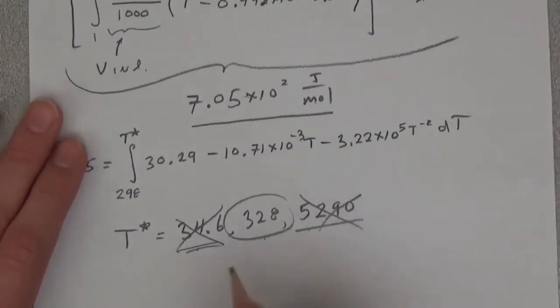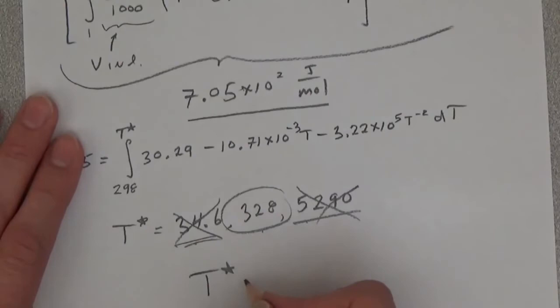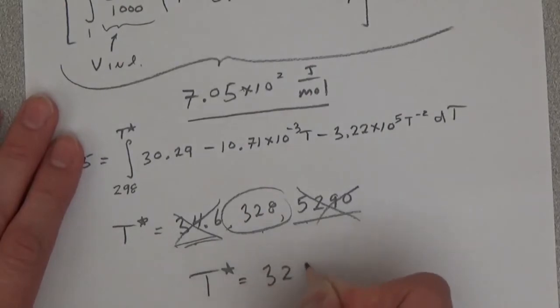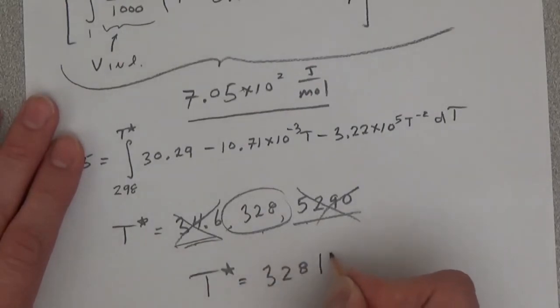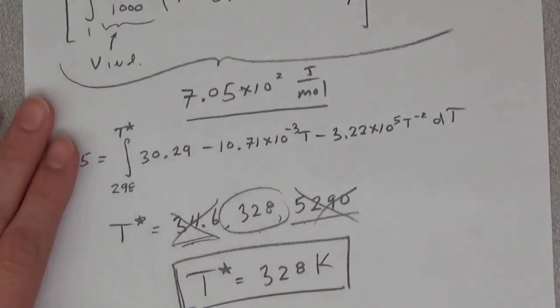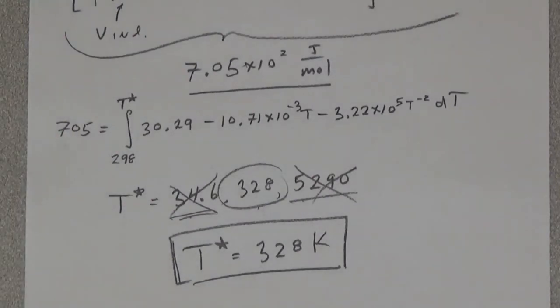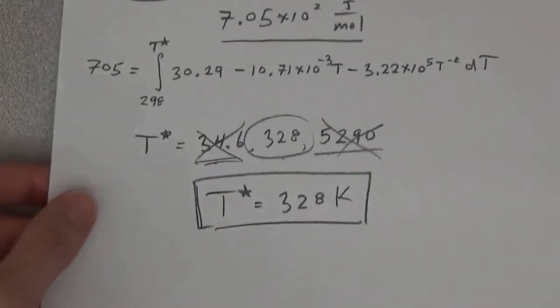Therefore that's the answer, 328 K. So we have to heat from 298 to 328 Kelvin to get the equivalent change in enthalpy with having the pressure change from 1 to 1,000 atmospheres.